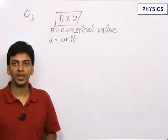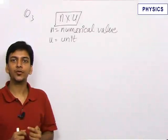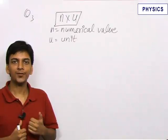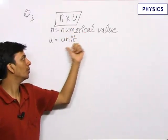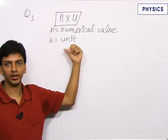This is the third question we have in hand. n into u is the expression for any physical quantity. Any physical quantity is expressed as n into u, where n equals numerical value and u is the unit of that physical quantity.